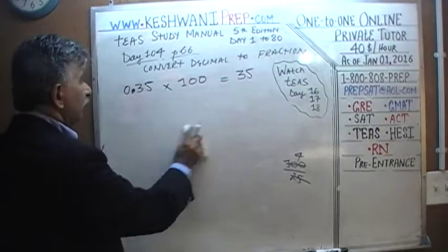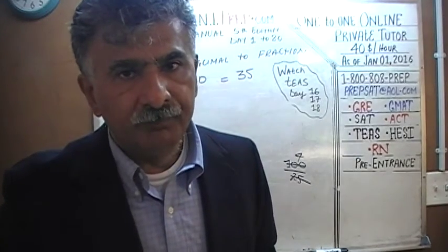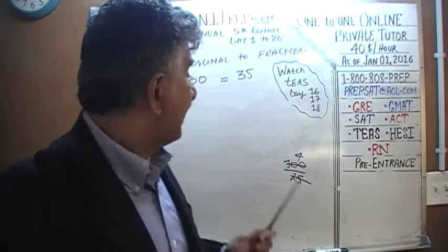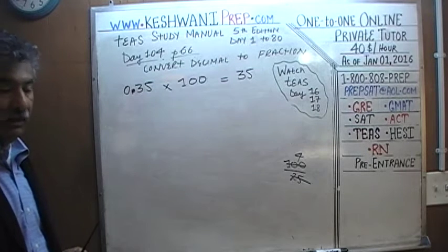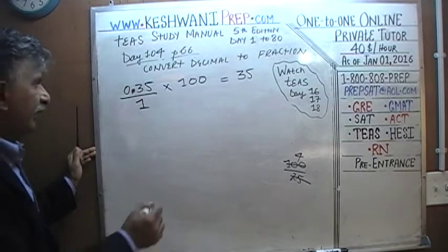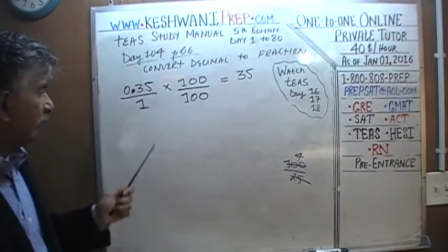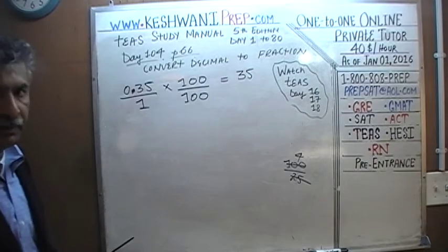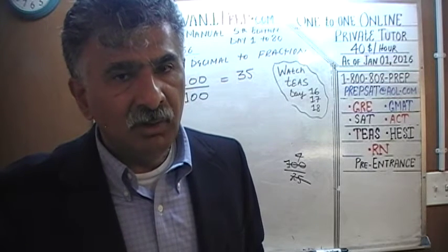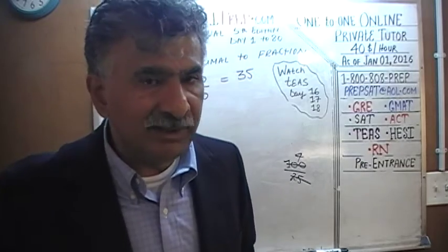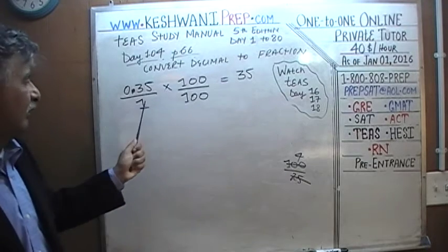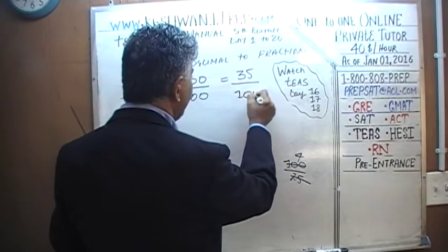But we cannot simply multiply 0.35 by 100 just because we wanted a whole number — we have to undo what we have just done. We cannot change the value of the quantity given to us. So since we multiplied the top number by 100, we must multiply the bottom number by 100 as well. On the bottom we have 1. So we multiply 0.35 by 100 over 100. We can do this because 100 over 100 is just 1 — we are not changing any value. So 0.35 times 100 is 35, and 1 times 100 is 100. We must now reduce it.